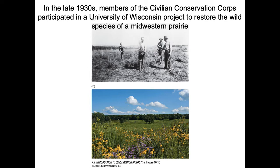This shows some examples. This is the Civilian Conservation Corps from the 1930s that helped do some prairie restoration. And you can see this is what it looks like today. You can have long-term success with some pretty basic practices.